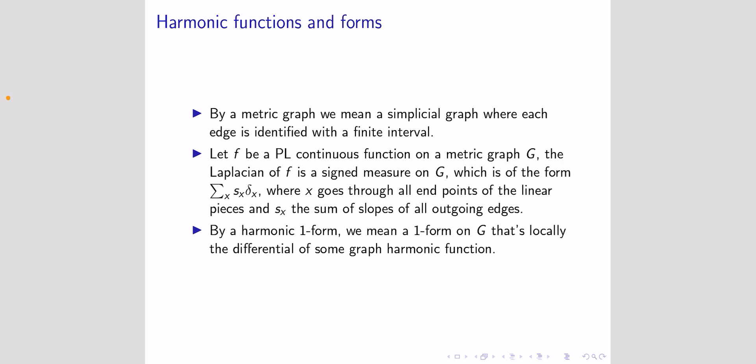If we have a metric graph we can consider piecewise linear continuous functions on it, where piecewise linear means linear when restricted to every edge. We can then define the Laplacian of a piecewise linear function. If we look at all the endpoints of the linear pieces — all the places where the function is no longer linear, which includes all the vertices — we can consider a linear combination of delta measures concentrated on those points, where the coefficients are calculated as follows.